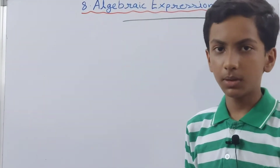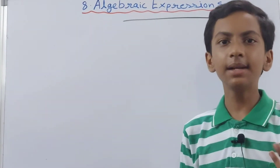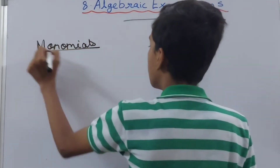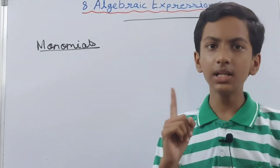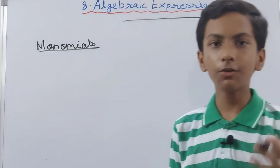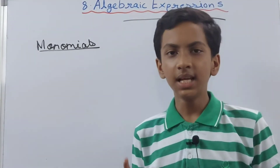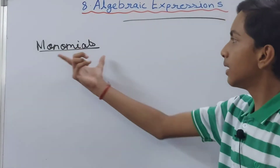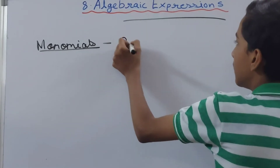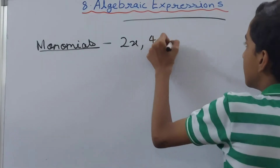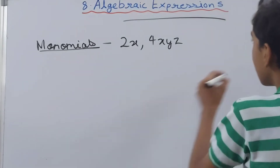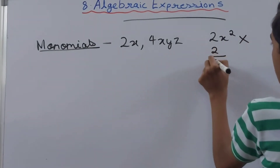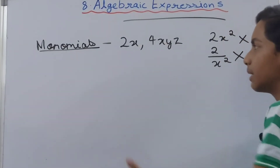Now we move on to types of expressions: monomials, binomials, trinomials, and polynomials. Monomials are expressions with just one single term. In a monomial, a variable cannot have a power of more than one, and you cannot put a variable in the denominator. Examples of monomials are 2x and 4xyz. However, 2x² and 2 upon x² are not monomials.